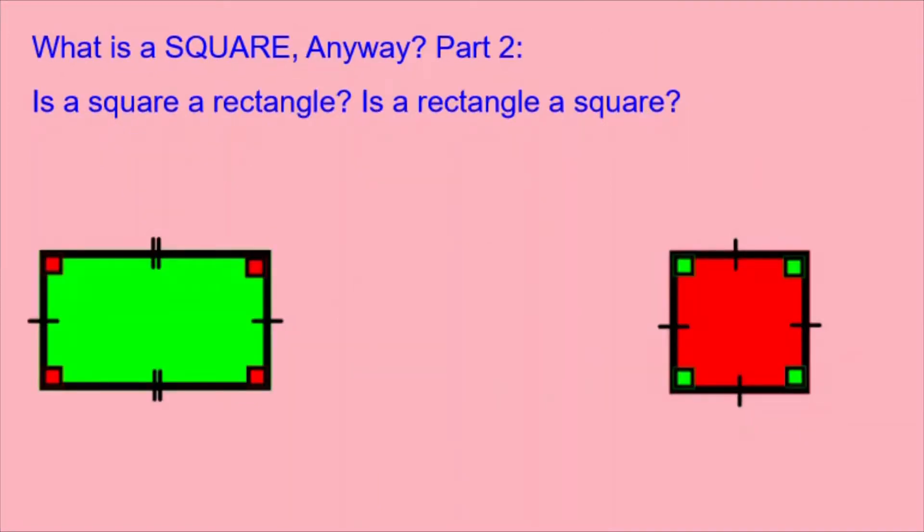In part one, we talked about the basic facts about a square and looked at the definition of a square. But now in part two, we're asking the question: is a square also a rectangle? And is a rectangle also a square?